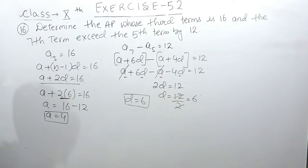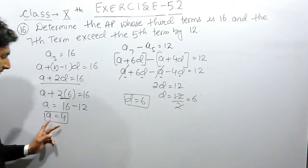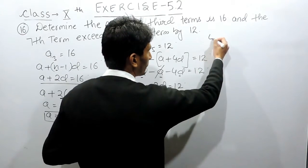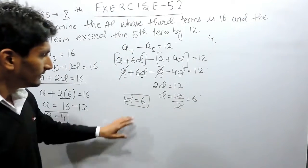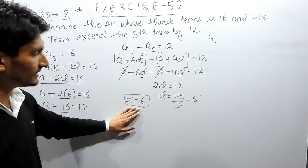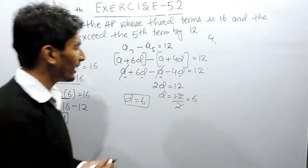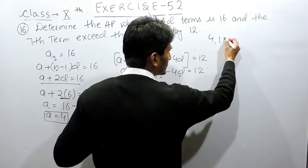We can say that in this AP, the first term must be 4, and after that there is a common difference of 6, meaning this constant you have to add to get the other digit.